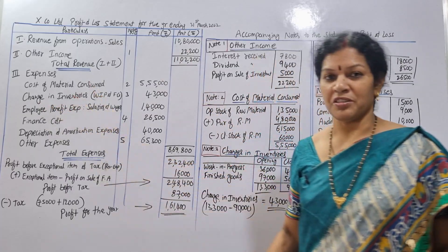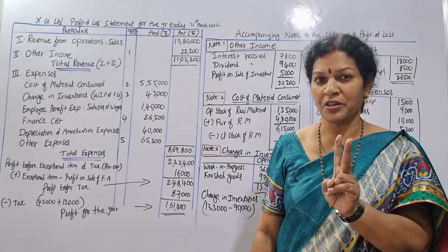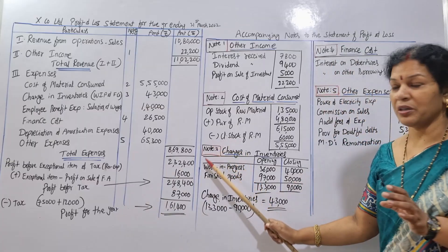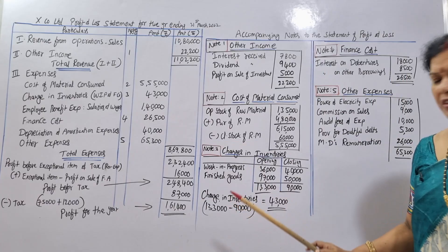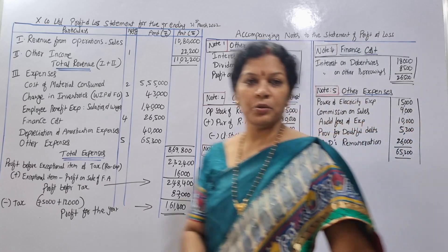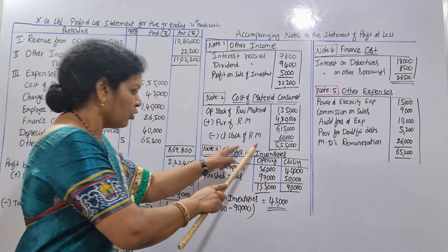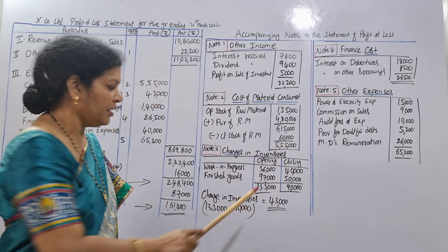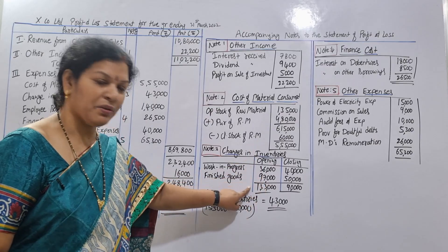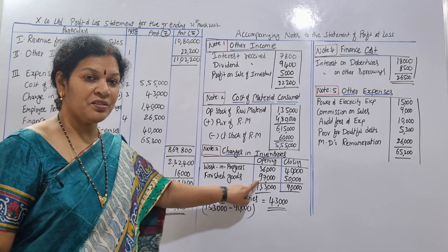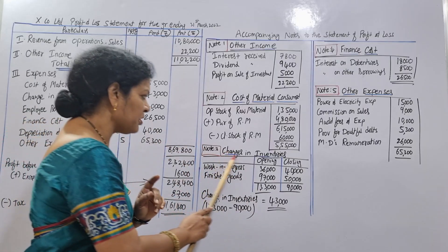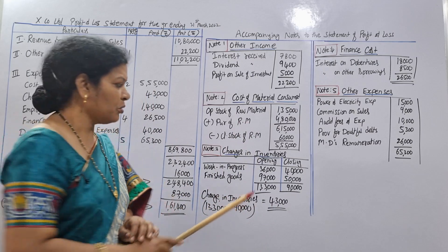Since we also need to account for work in progress and finished goods, we must prepare a change in inventory note. That is Note Number 3 — changes in inventories. We look at opening and closing values of work in progress and finished goods. The difference between these two gives us the change in inventory, which comes to 1,333.